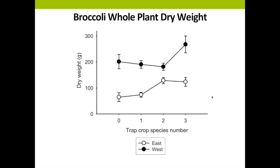Here we're looking at broccoli whole plant dry weight from the broccoli harvested at the end of the season. The x-axis is our trap crop species composition: zero represents our control with no trap crops, then trap crops with one species (monocultures), diverse trap crop with two species, and diverse trap crop with three species. The y-axis is dry weight in grams. Open circles are our east location and closed circles are our west location. We found that broccoli adjacent to our diverse trap crops containing all three species attained the greatest dry weight, and this occurred at both locations.